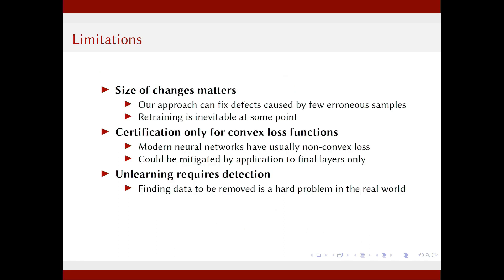Some limitations of our methods: the number of changes matters, and we cannot fix defects affecting tens of thousands of samples — at some point, retraining becomes inevitable. Our certification currently only holds for convex loss functions, which is not satisfied by modern neural networks, though this can be mitigated by freezing early layers and only using the final layers which typically have convex loss. Finally, unlearning requires detection — our approach requires the service to know all problems in the dataset, which can be quite hard in practice.